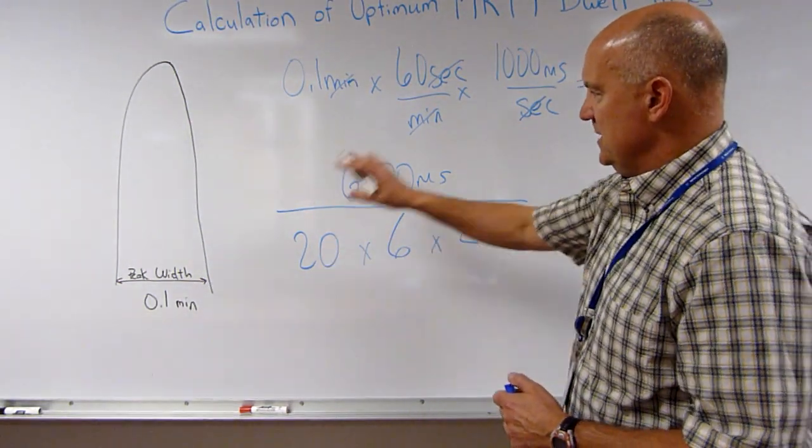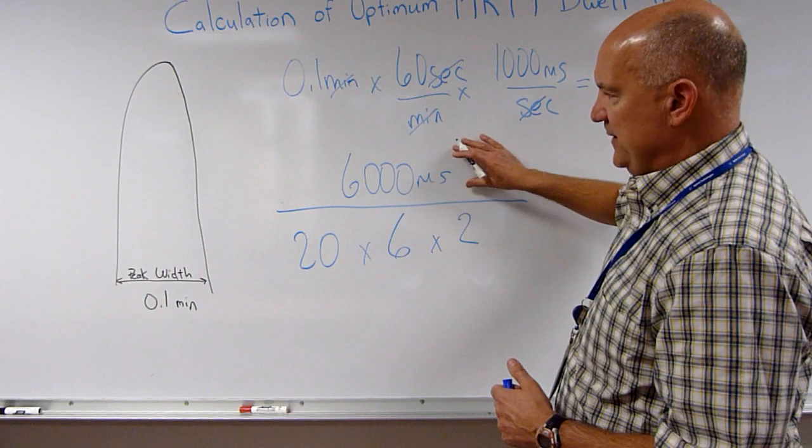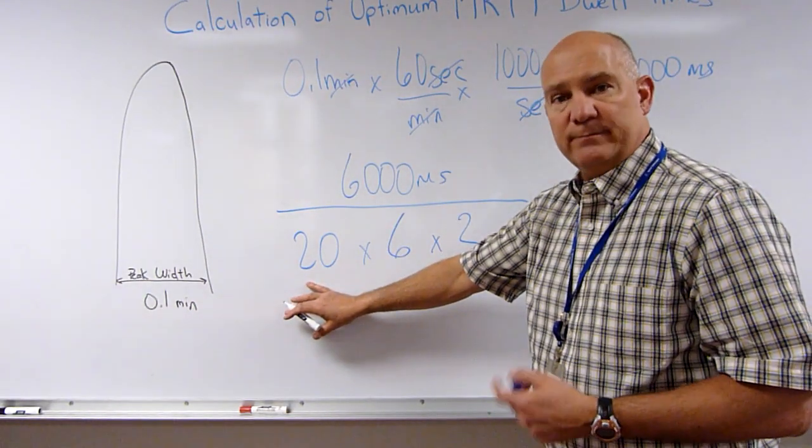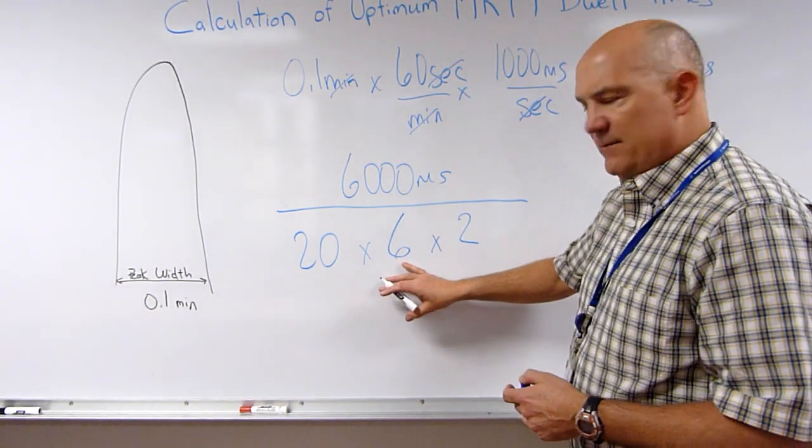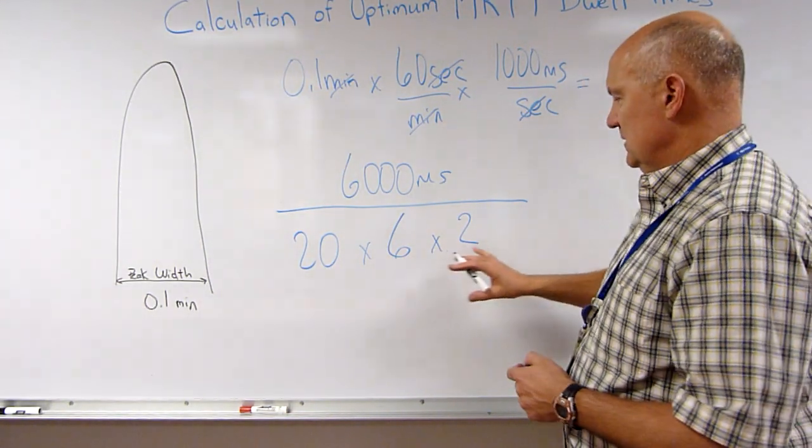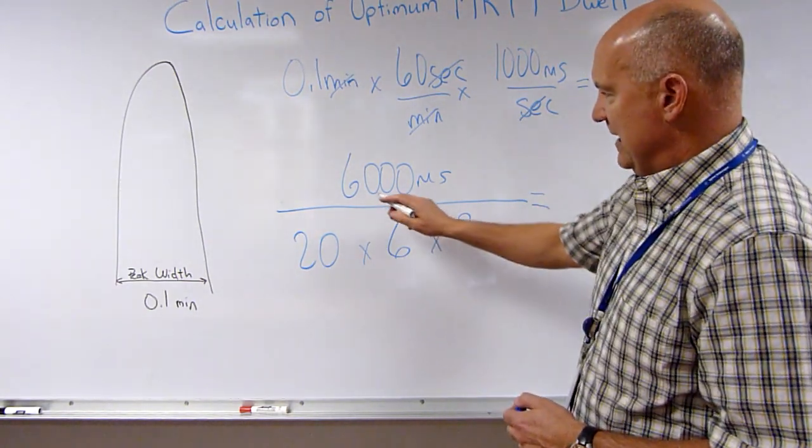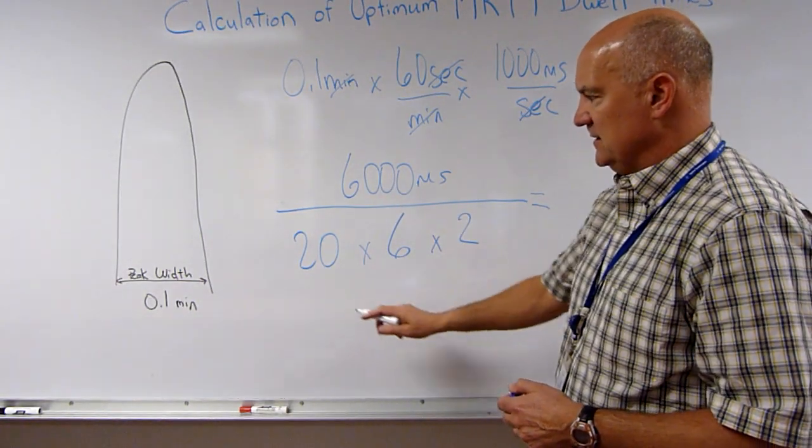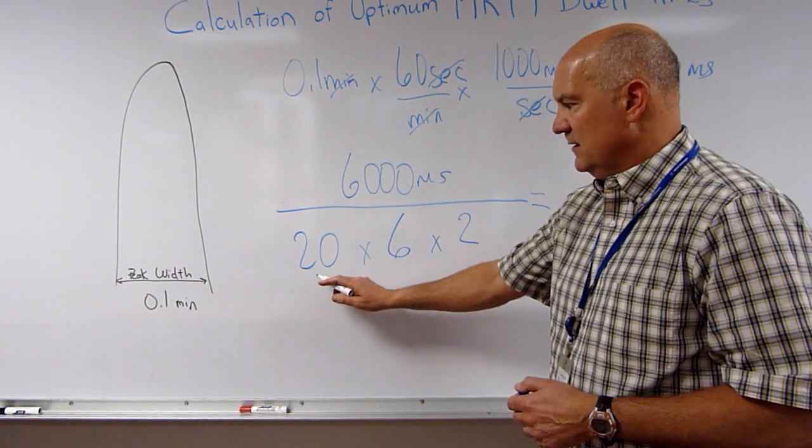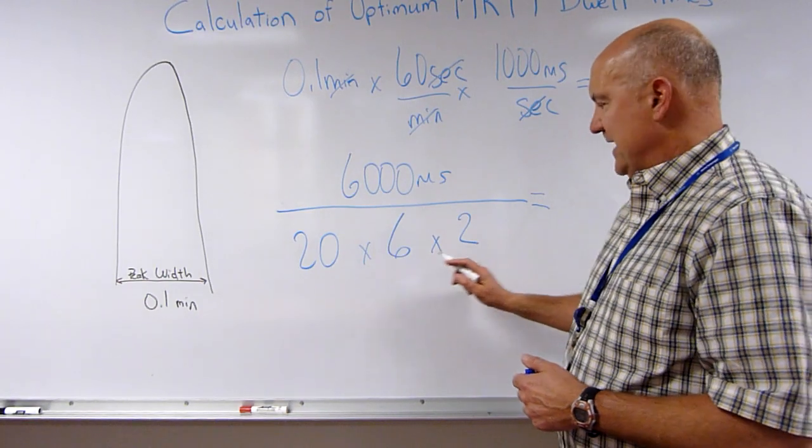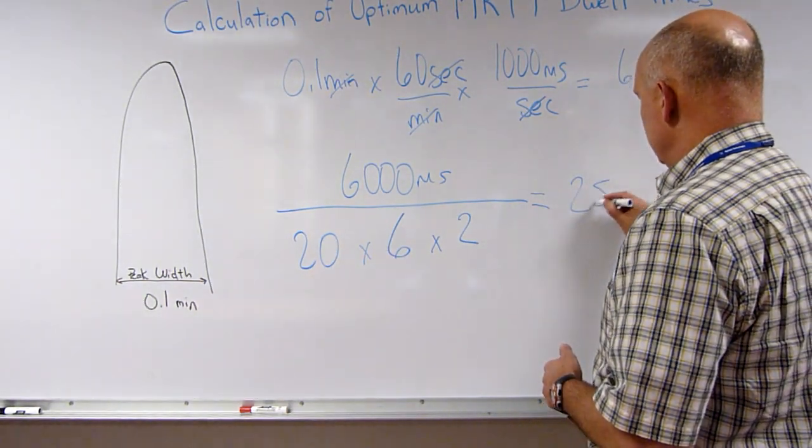Okay? This is our nice generic equation. Our peak width in milliseconds divided by the number of desired points per transition divided by the number of compounds divided by the number of transitions per compound. And if we calculate this, 6000 milliseconds divided by 20 is 300, 300 divided by 6 is 50, 50 divided by 2 is 25 milliseconds.